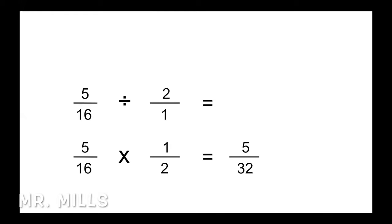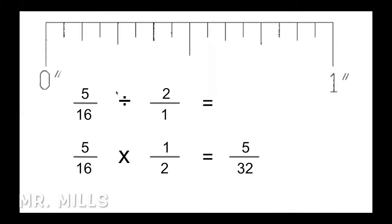Where does a 32nd fall on a tape measure? A 32nd is half of a 16th. If we look at the ruler, this would be 1 32nd, 2 32nds — counting over, we should have 5 32nds right there. It's a little bit bigger than an eighth of an inch. 32nds aren't used often, but know that it's half of a 16th and might come up when laying out different problems.